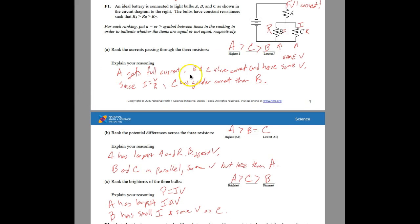A gets full current, B and C share current, and they have the same voltage. Since I equals V over R, C has a greater current than B because R is smaller for C and bigger for B. That's your explanation.